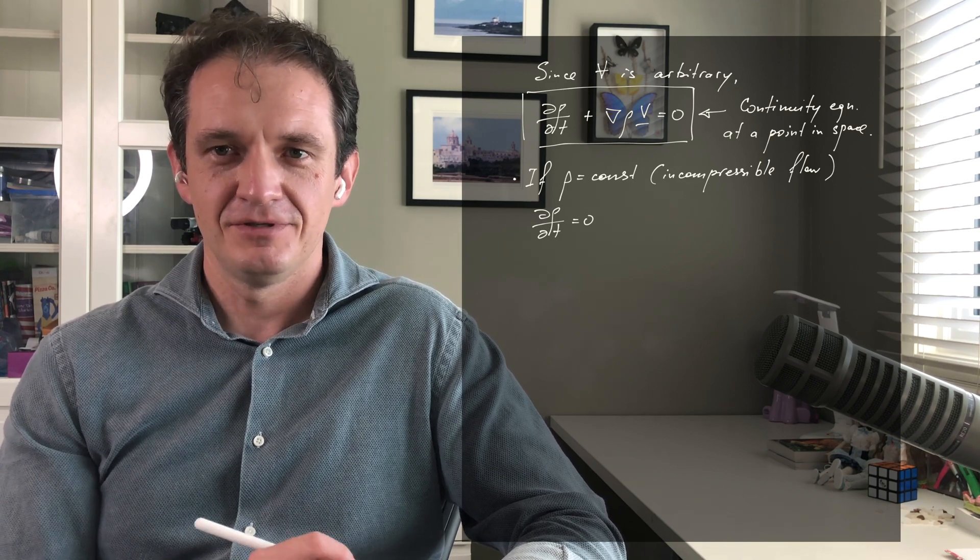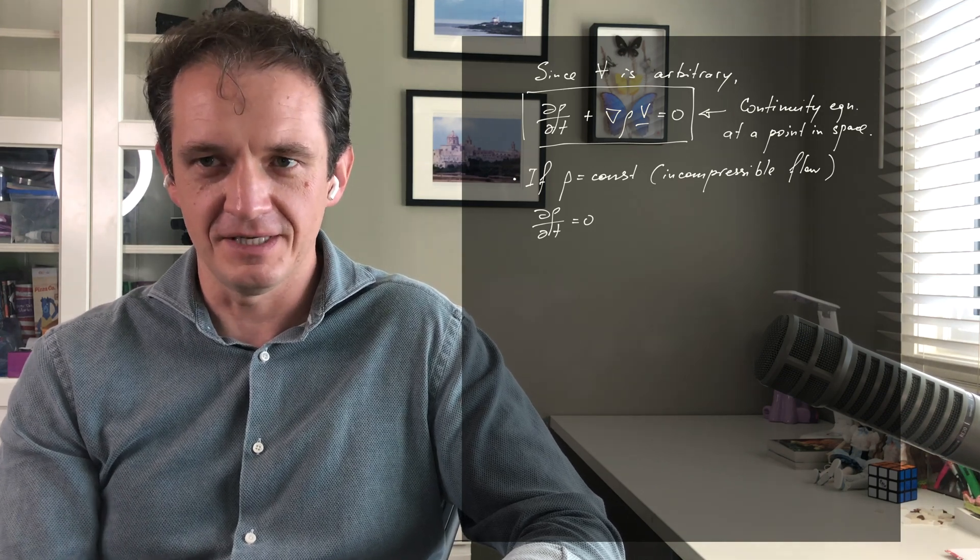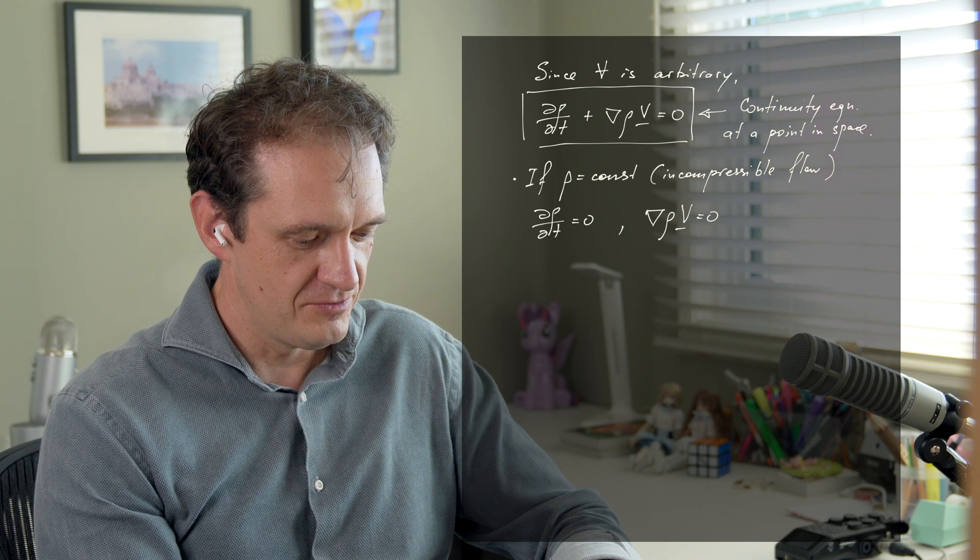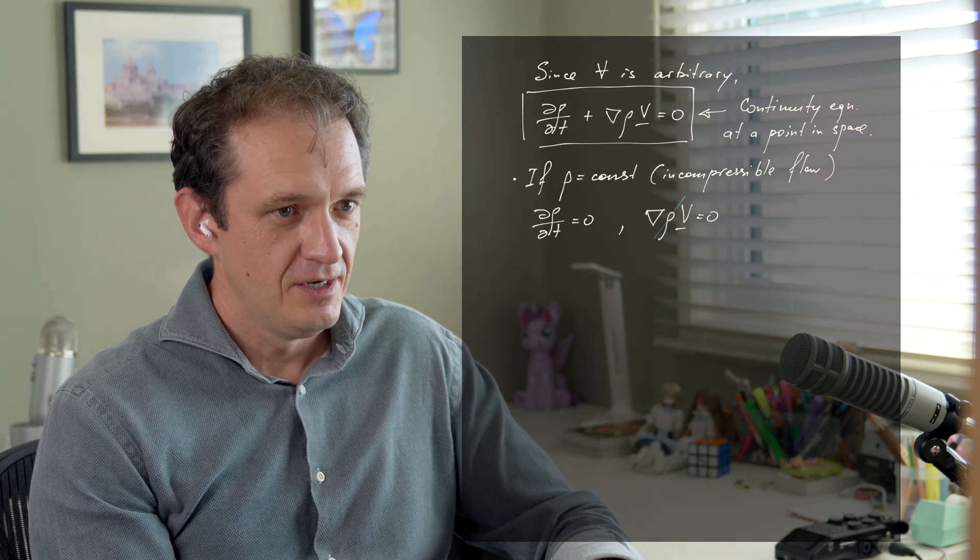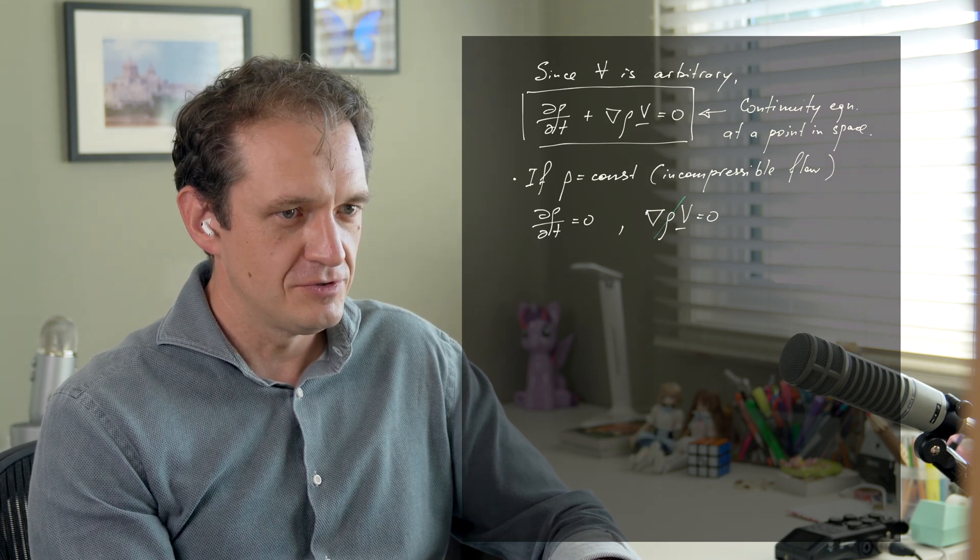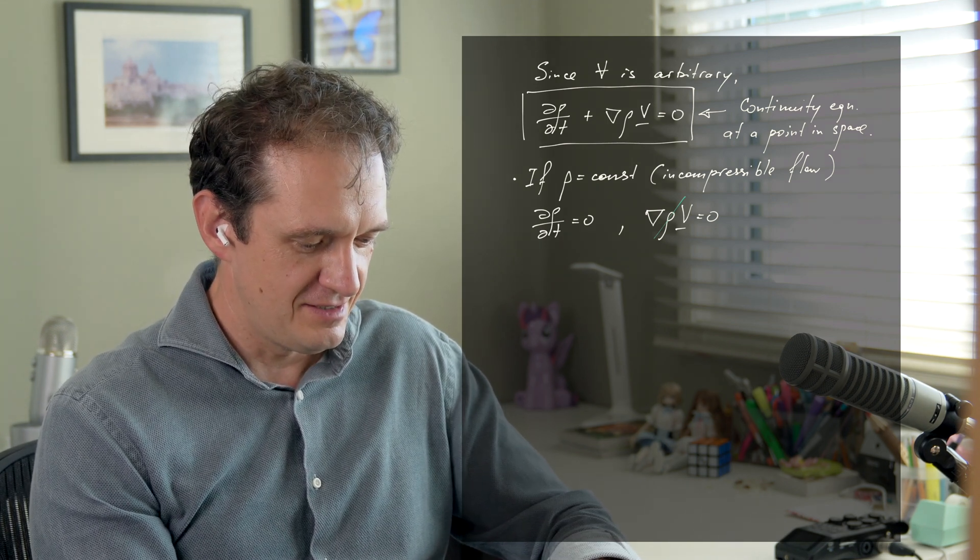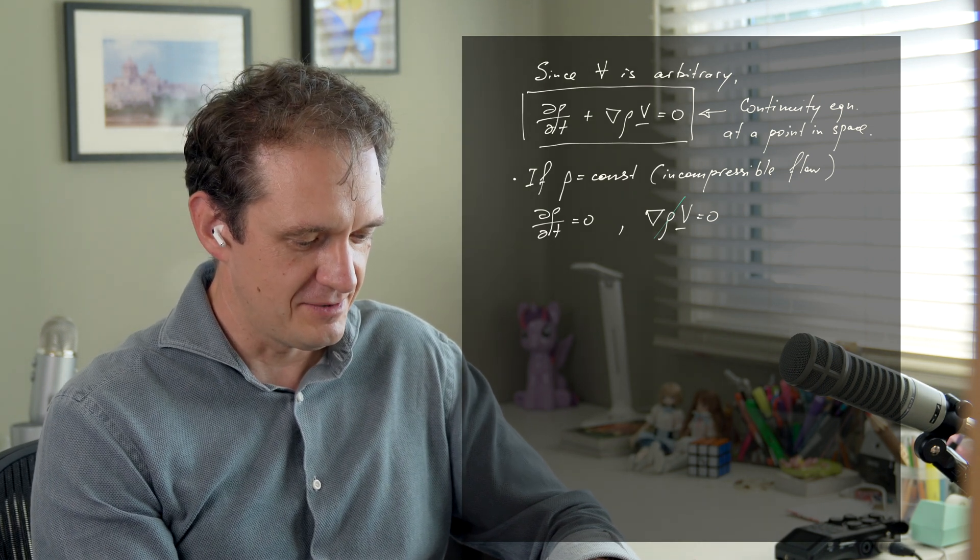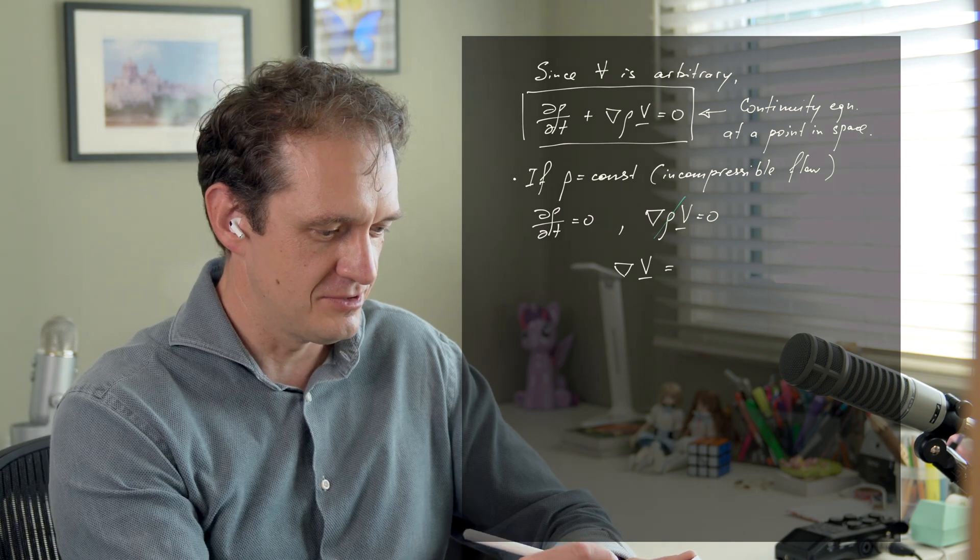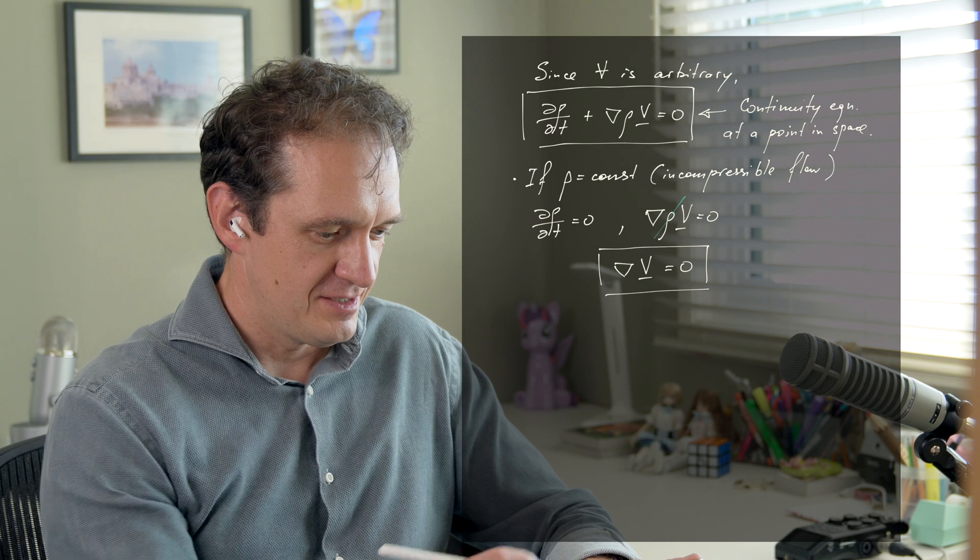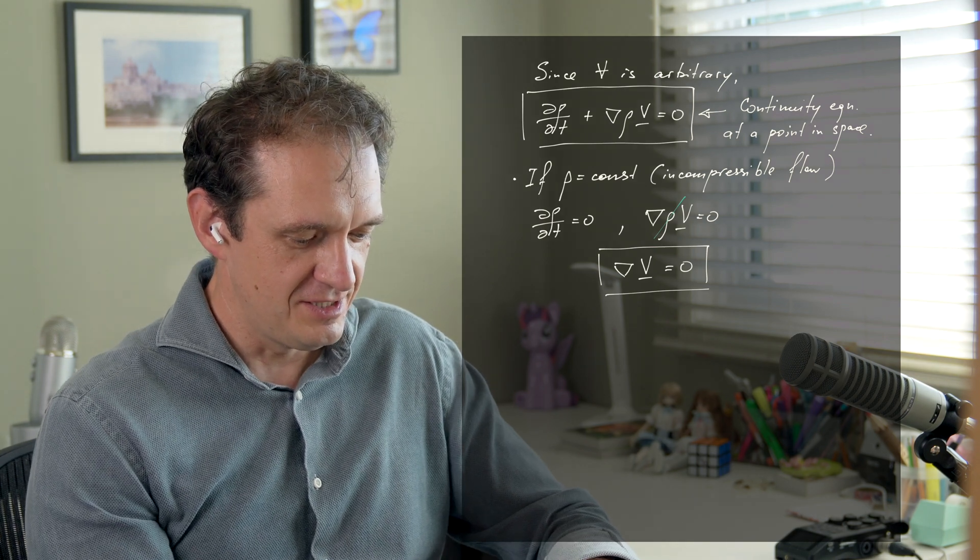Obviously, and this is not because the flow is steady—this term drops out because of incompressibility. Then the equation becomes del dot rho V equals zero. The density can be taken out of the derivatives and divided through, and the equation becomes del dot V equals zero. It's a much simpler, very elegant form of the equation.